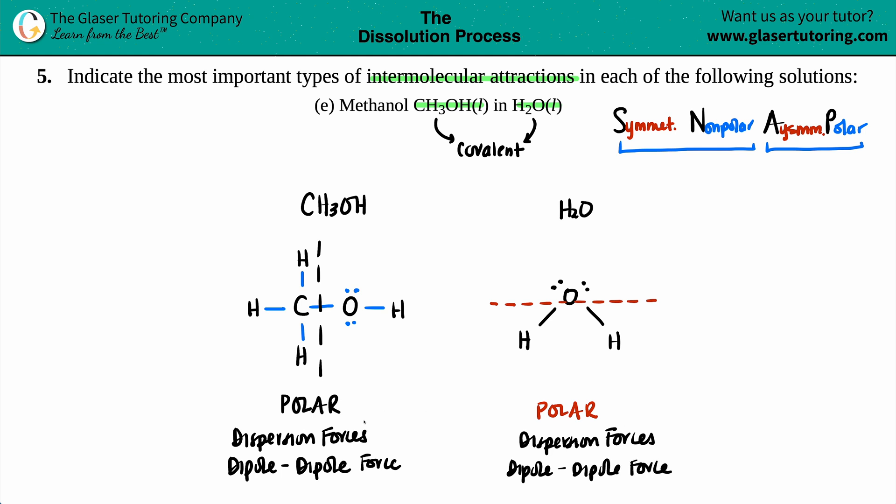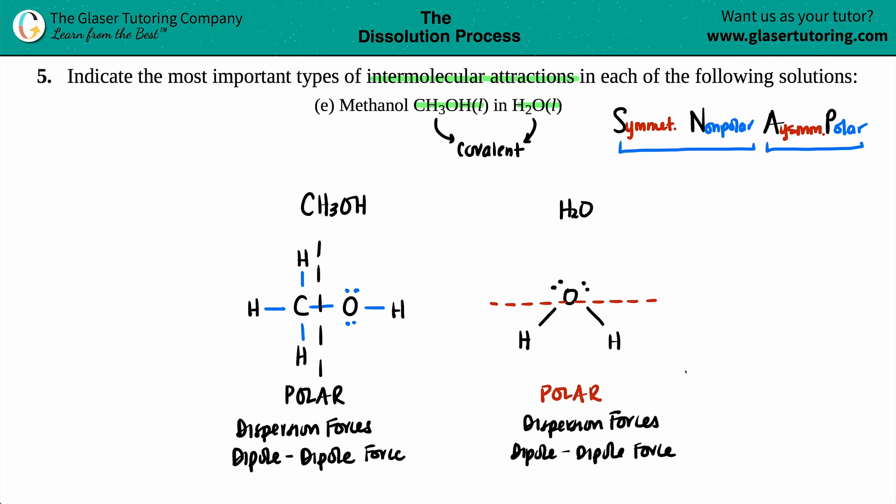And now the last one, the strongest one, if these have it, is the hydrogen bonding. Don't forget about that hydrogen bonding. And remember, hydrogen bonding only happens between OH, NH, or FH molecules, or bonds in the molecule.